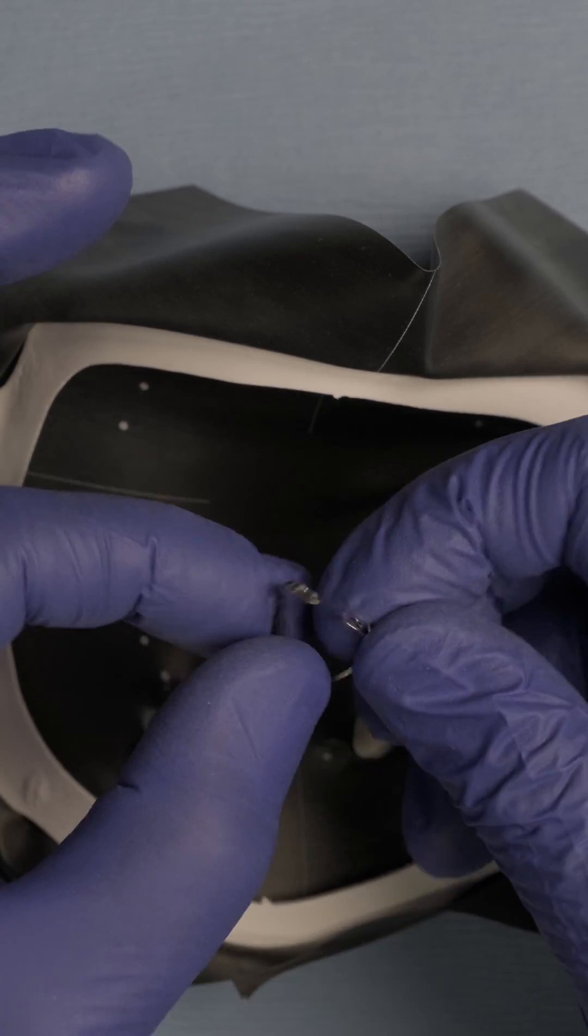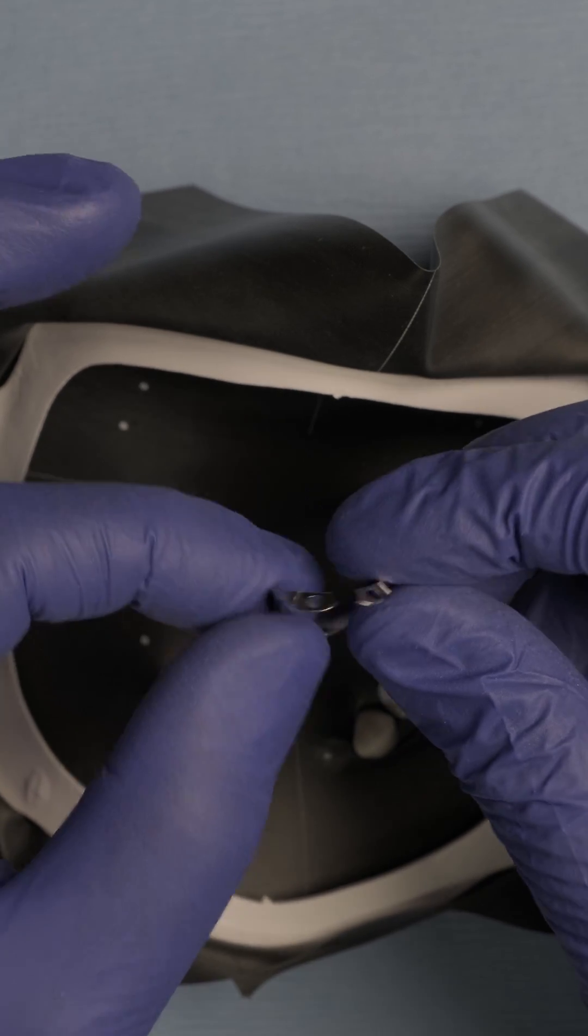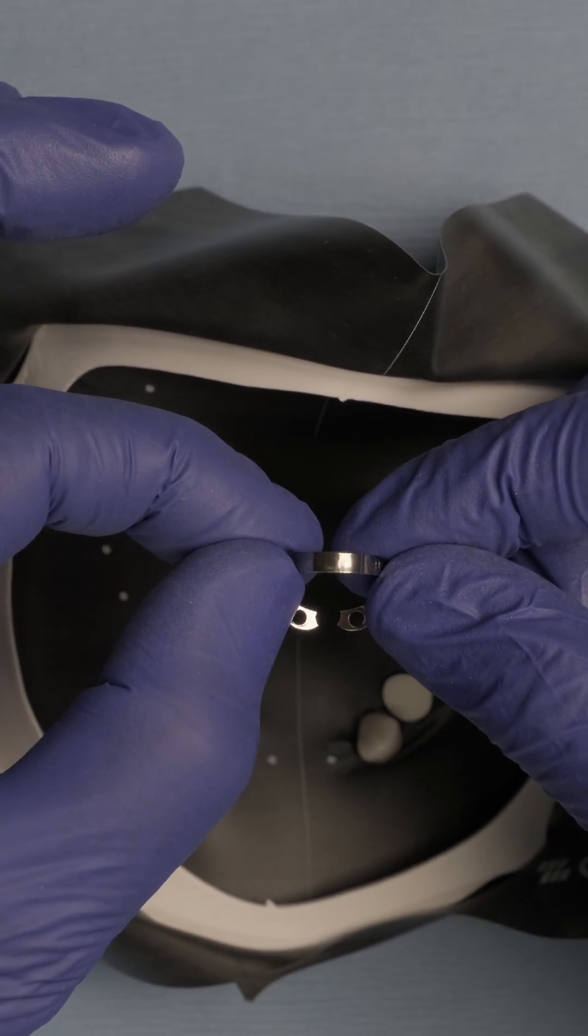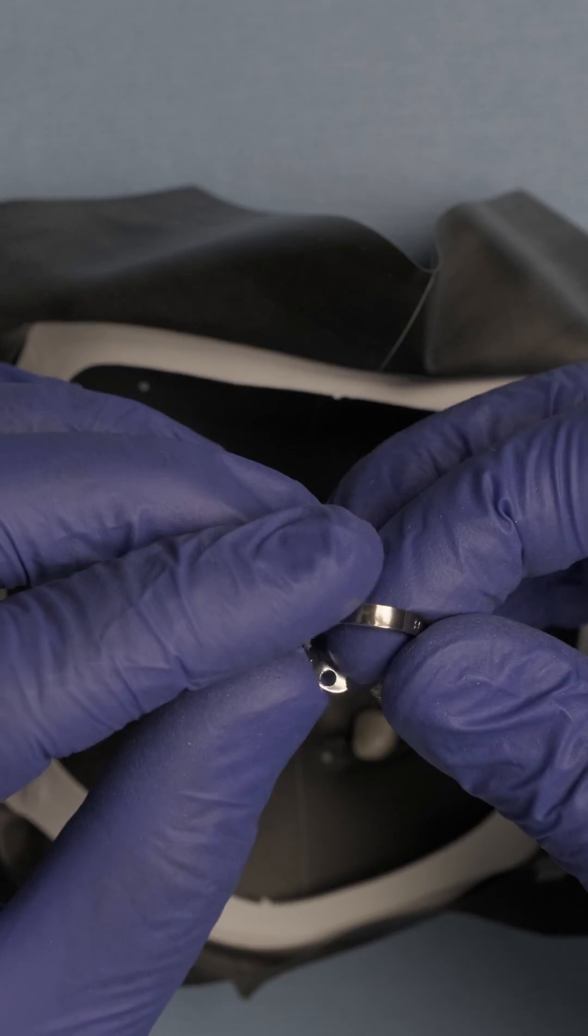As you can see, this is classified as a retraction clamp. So this clamp is actually meant to push the rubber dam and the tissue apically so that you have more tooth exposed.